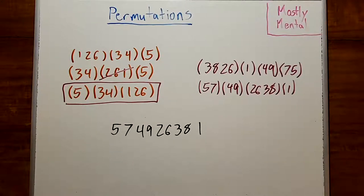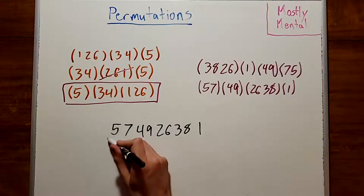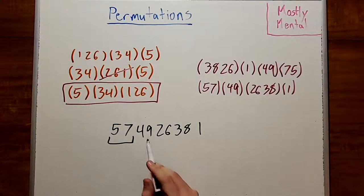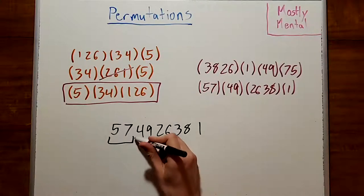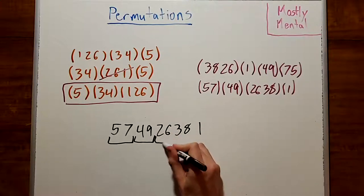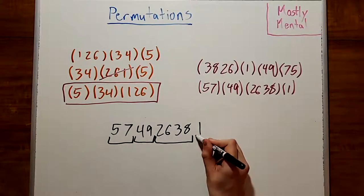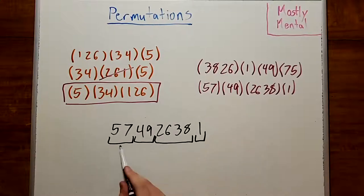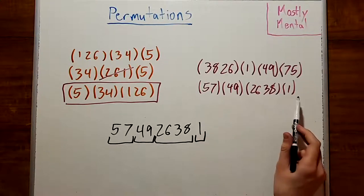To do so, we'll group numbers into a cycle until we find one that's less than the first. So we start by grouping 5 and 7, but then 4 is less than 5, so that's the end of our cycle. And then we'll group 4 and 9, but 2 is smaller, so that ends that cycle. And then this gives us (2, 6, 3, 8), and 1 is on its own.